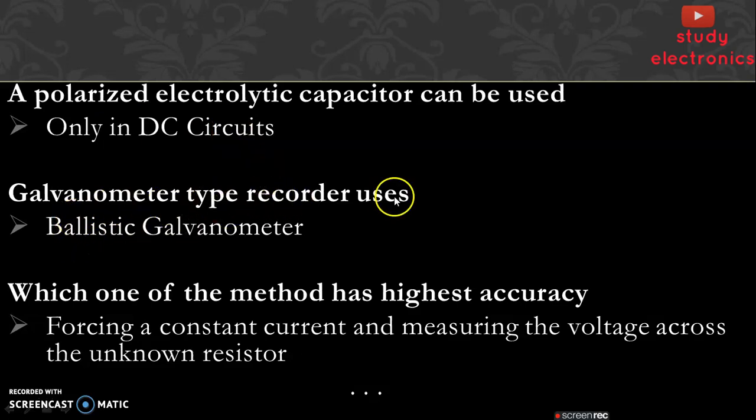Galvanometer type recorder uses ballistic galvanometer. Which of the following method has highest accuracy? Forcing a constant current and measuring the voltage across the unknown resistor. So this method has the highest accuracy.